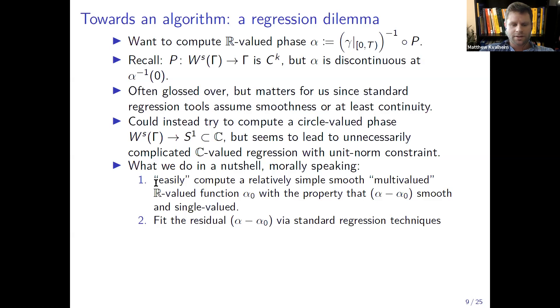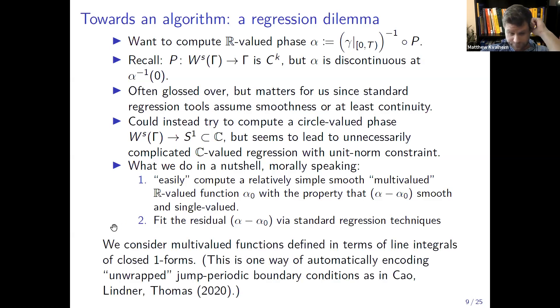We didn't want to deal with that so what we ended up doing in a nutshell, at least morally speaking, is we in air quotes easily compute a relatively simple multi-valued function, a multi-valued real valued function with the property that if we just subtract that away from the true real valued asymptotic phase, what you get is a function which is nice and smooth as a single valued function. After we do this easy part, this residual can just be fit with standard regression techniques because the residual is nice and smooth.